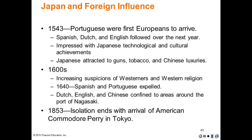In 1543, the Portuguese were the first Europeans to arrive. Spanish, Dutch, and English followed over the next years. They were impressed with Japanese technology and cultural achievements. The Japanese, in turn, were attracted to guns, tobacco, and Chinese luxuries brought by the Europeans. In the 1600s, increasing suspicions of Westerners and Western religion began to develop. In 1640, Spanish and Portuguese were expelled from the country. Dutch, English, and Chinese were confined to areas around the port of Nagasaki.